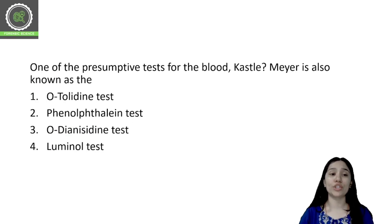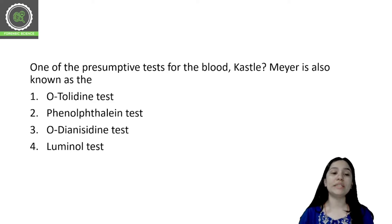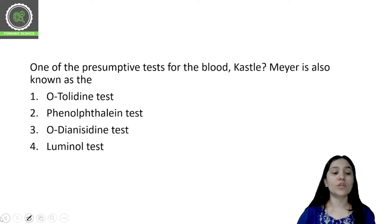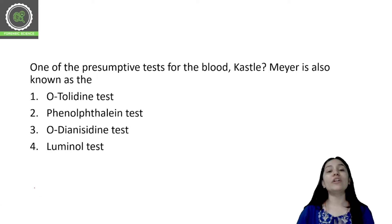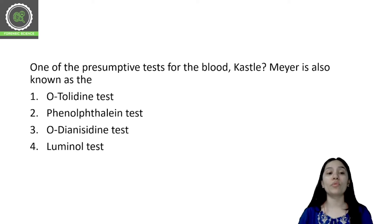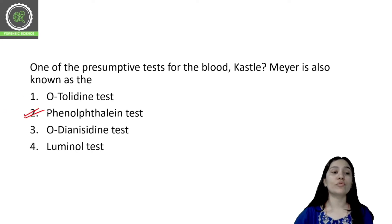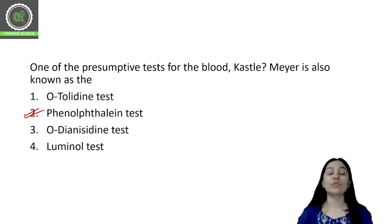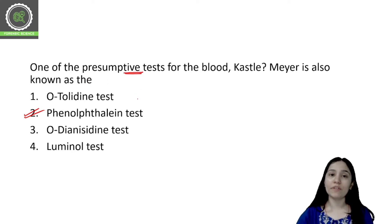Moving to the next question: one of the presumptive tests for blood, which is the Kastle-Meyer test, is also known as? You have four options: O-Tolidine test, Phenolphthalein test, Luminol test, and so on. The correct option is option number two. When we start studying forensics, the Kastle-Meyer test is also known as the Phenolphthalein test. So Phenolphthalein test and Kastle-Meyer test are both the same test, and it is a presumptive test for blood analysis.